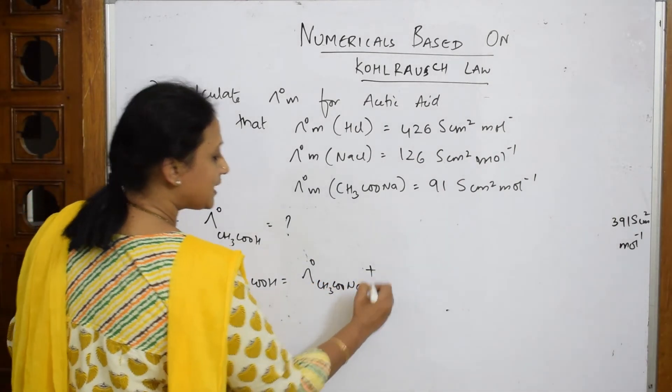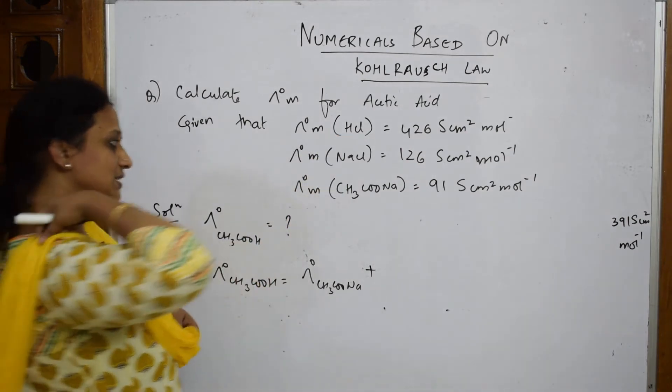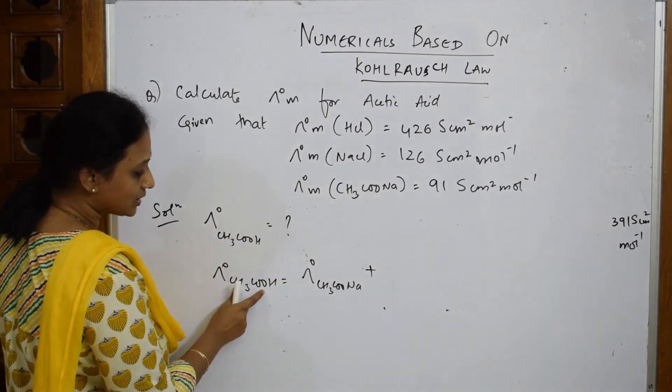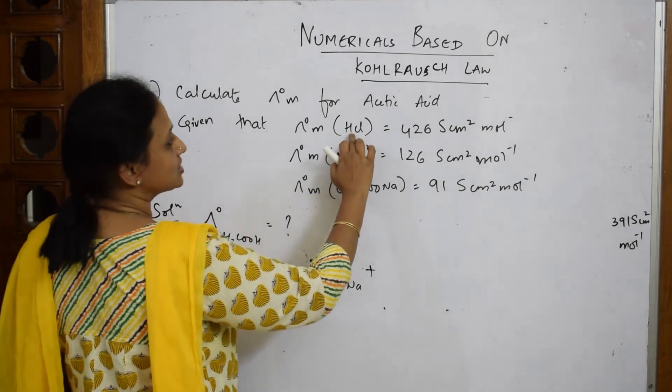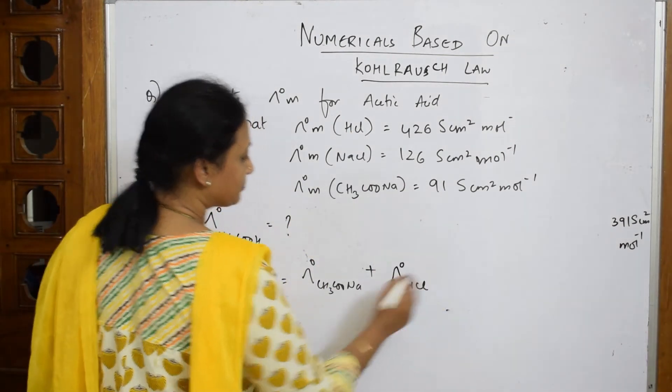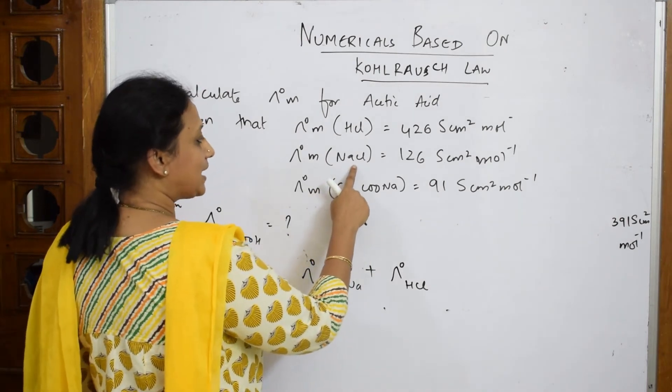Now to this I have to add. Should I add this one or should I add this one? Or how should I see? Now see here, acetate ion is already over. What else do I require? I require H+. HCl is present where? In this. So you're going to add lambda HCl. Now there's this one also left. Should I subtract or add?